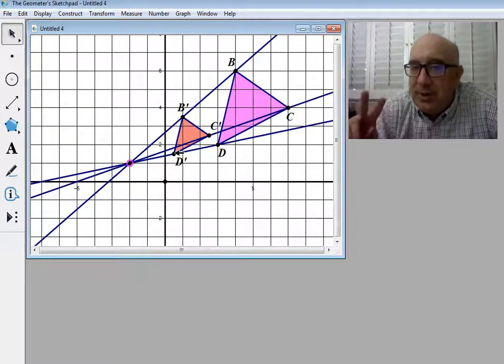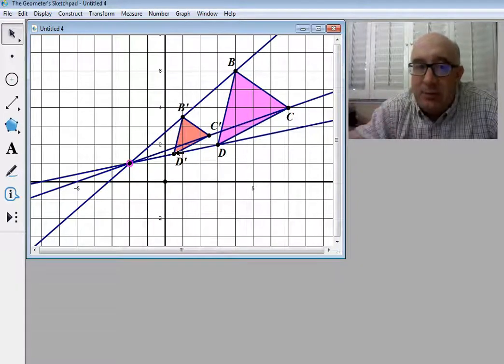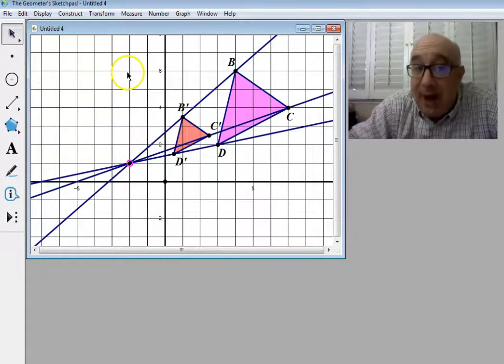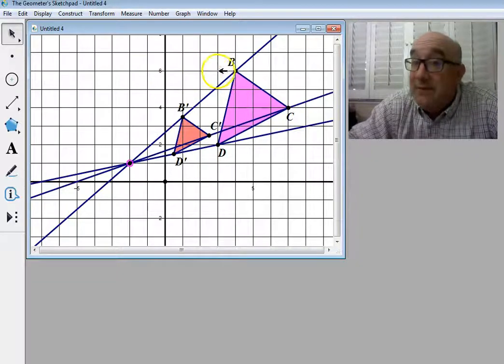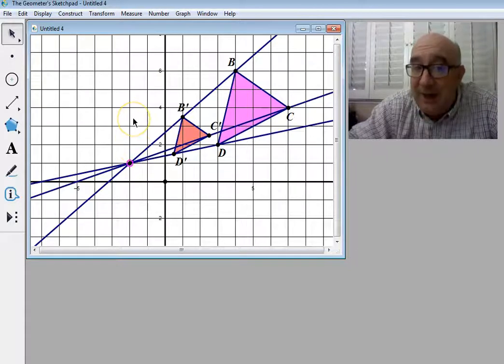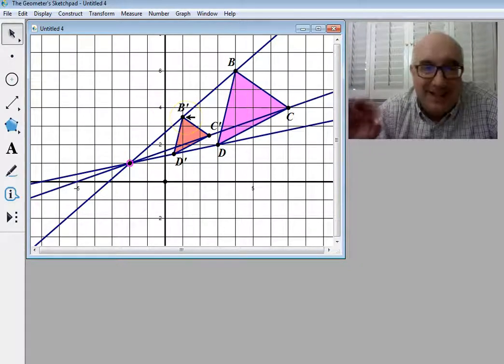Notice both those original values got halved or divided by 2. Same thing if I went to B, 1, 2, 3, 4, 5, up 1, 2, 3, 4, 5, 6, but to get to B' would be up 1, 2, and a half, and over 1, 2, 3. It is exactly half.